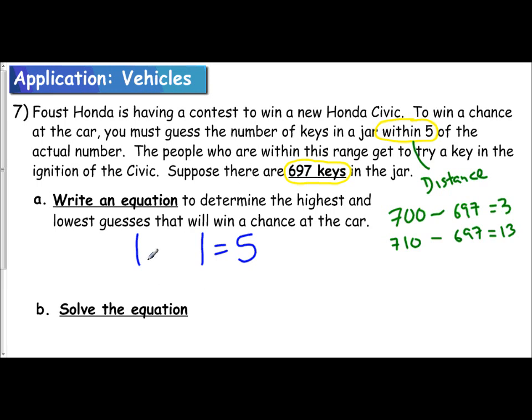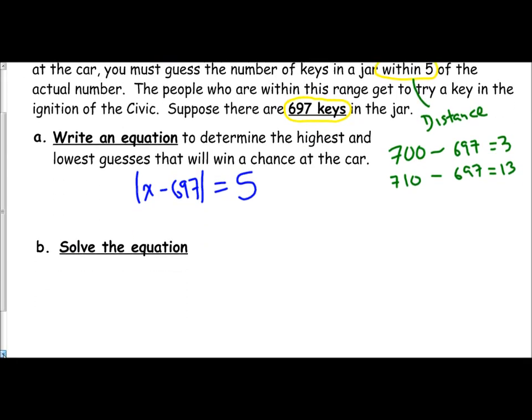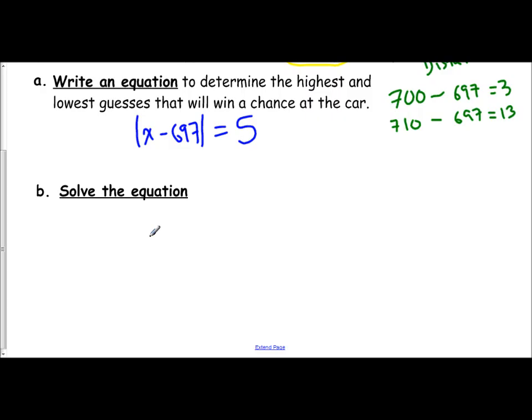So the equation is your guess, which is x minus 697. To find the distance from a number, you always subtract it. So that is our equation: absolute value of x minus 697 equals 5.